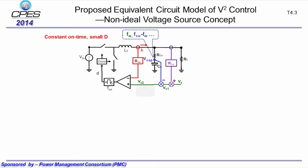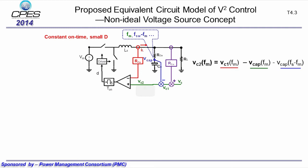Our proposed equivalent circuit model is based on the previous non-ideal voltage source concept. From knowledge of current mode control, the inductive current is well controlled by control signal VC2. For V-square control, VC2 is composed by VC1, VCAP-FM, and the sideband of the capacitor voltage VCAP-FSW-FM.